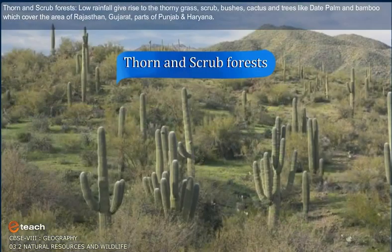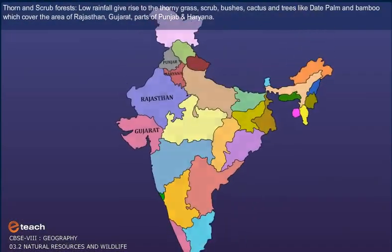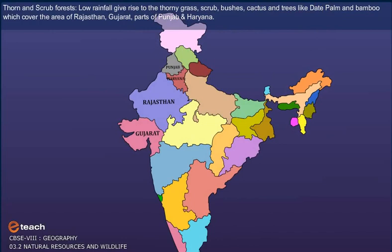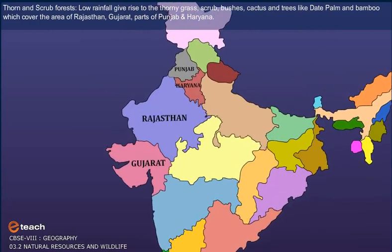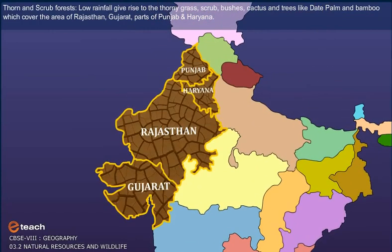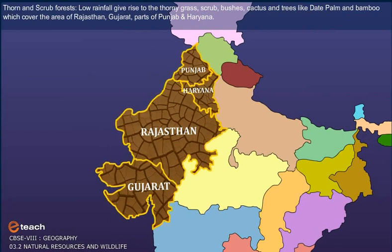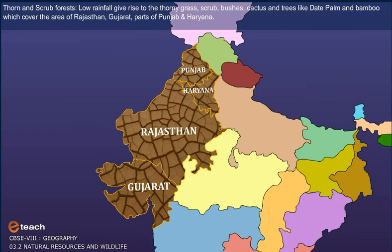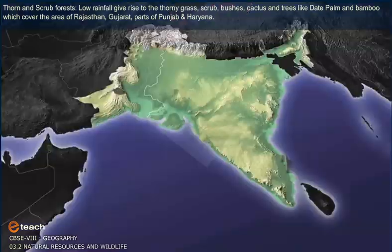Thorn and Scrub Forest. Low rainfall gives rise to thorny grass, scrub, bushes, cactus, and trees like date palm and bamboo, which cover the area of Rajasthan, Gujarat, and parts of Punjab and Haryana.